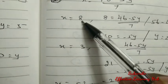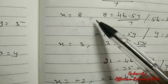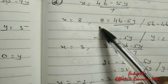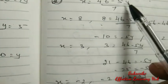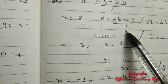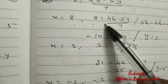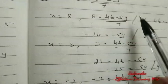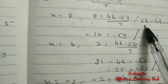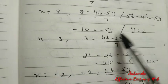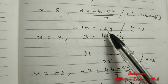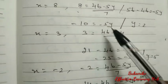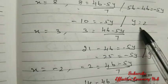Take any 3 values — I took 8, 3, and minus 2. For x equal to 8: 8 equal to (46 minus 5y) divided by 7. Cross multiply: 56 equal to 46 minus 5y. So 56 minus 46 equal to minus 5y, giving minus 10 equal to minus 5y. Minus minus cancel, so y equal to 2.